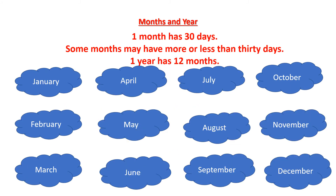Months and year. Month means month and year means year. A month has 30 days, though some months may have more or less than 30 days — some months have 31 days and some months have less than 30 days.